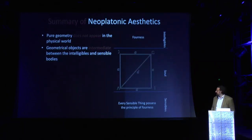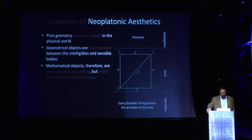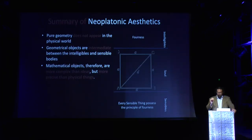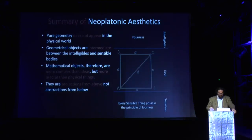The Neoplatonists postulated that geometrical objects are intermediate between the intelligible and sensible realm — they are imaginal objects. They don't exist on the physical level nor the intelligible level; they somehow participate in something in between. Mathematical and geometric objects are therefore more complex than ideas and more precise than physical things. Number and geometry are the very stuff of the imagination and the language of the soul — projections from above, not abstractions from below.